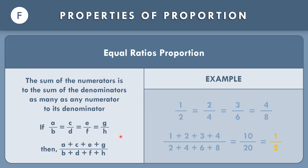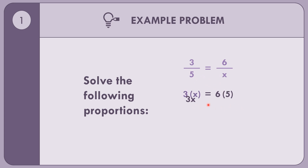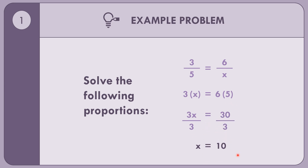When there are many ratios, we can use the equal ratios proportion property. Now let us solve the following proportions. Example 1: 3 over 5 equals 6 over X. Using the cross product property: 3 times X equals 6 times 5, so 3X equals 30. Dividing both sides by 3, X equals 10.